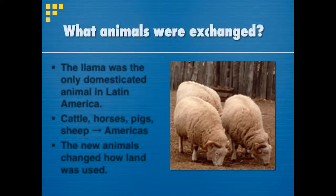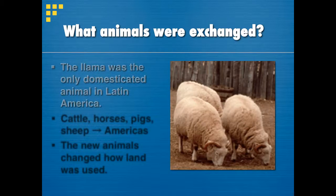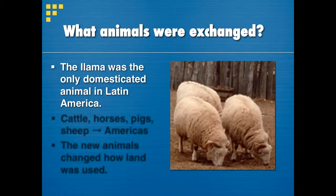Our next left-side question is: what animals were exchanged? We're focusing on the most important animals that had a high impact on the different continents. The llama, also known as the alpaca, was the only domesticated animal in the Americas in general — the only animal that could possibly carry the weight of a human on its back. There were no horses, no cows, no oxen. If you consider farming and the impact that cattle have on farms, that literally did not exist in the Americas before the time of Christopher Columbus.